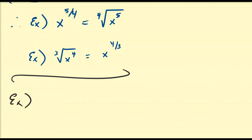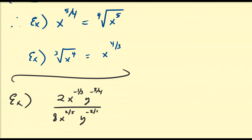Alright, so let's work out a very extensive application that combines all these things, including fractional exponents. Let's do 2x^(-1/3) y^(-3/4), all over 8x^(2/5) times y^(-2/5), all to the power of negative fifteen-halves. If you want to try this on your own, just take a couple of minutes.